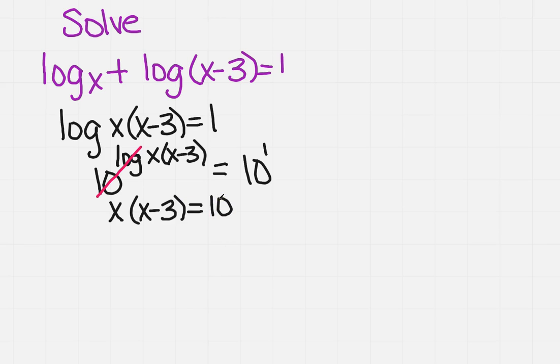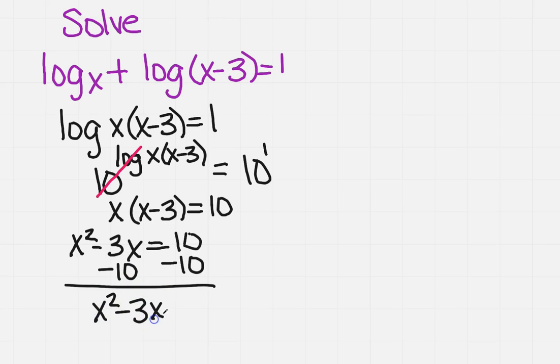So I'm going to need to distribute my x's. So I've got x squared minus 3x equals 10. Now I need to set it equal to 0. So I've got x squared minus 3x minus 10 equals 0.